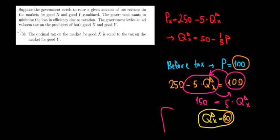Let's work on question 38 now. Suppose the government needs to raise a given amount of tax revenue on the markets for good X and good Y combined.